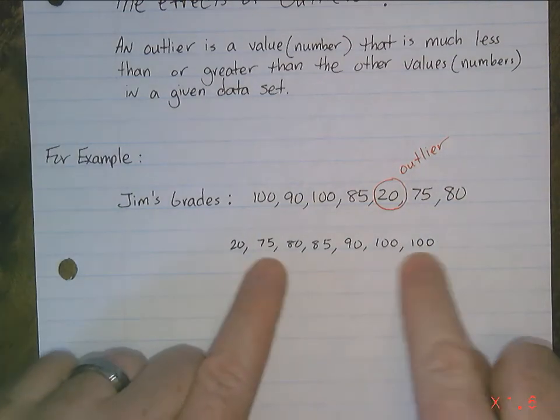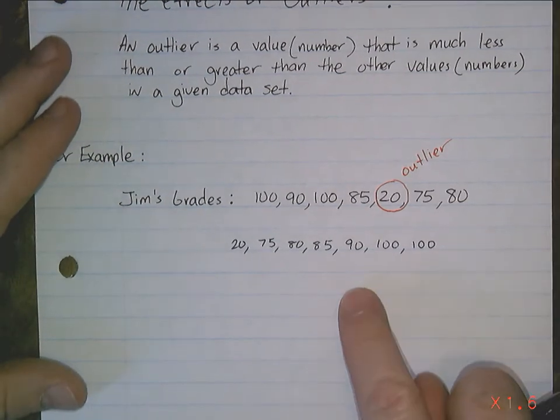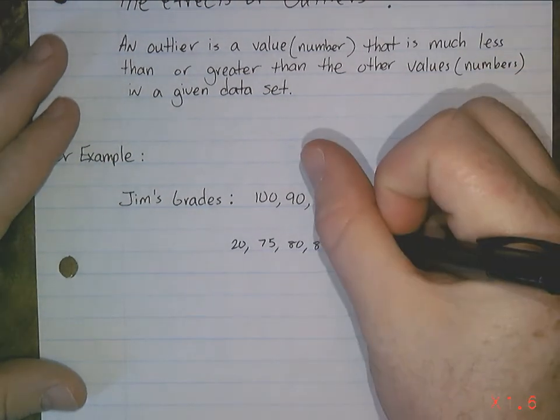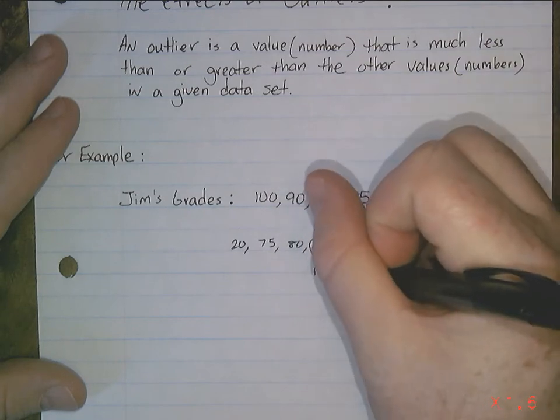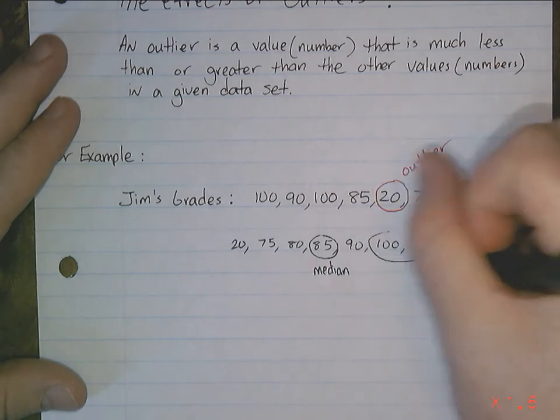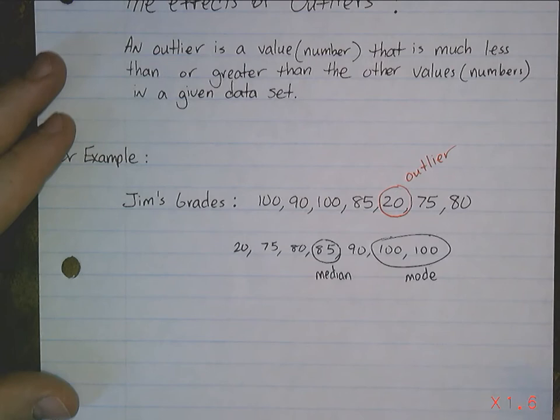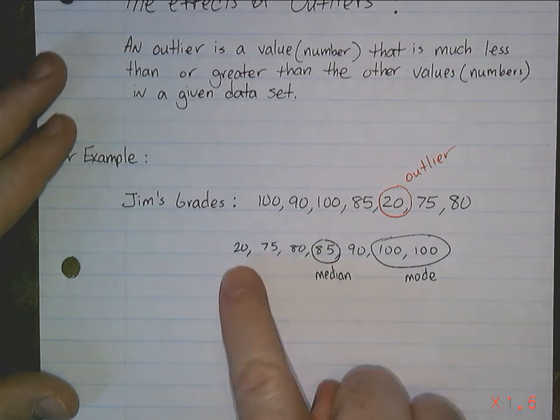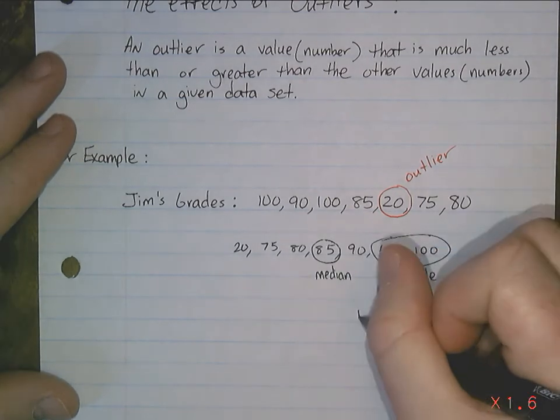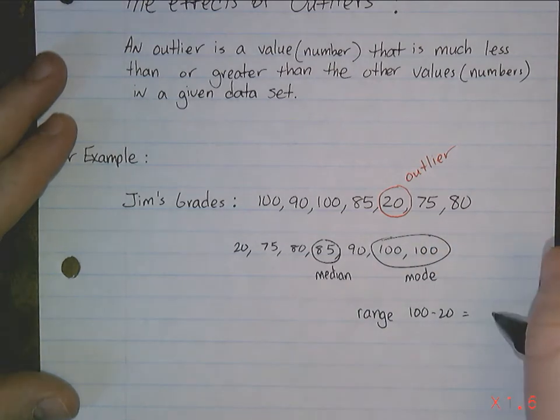The median is 85. The mode is 100. The range is from 20 to 100. So the range is 80.